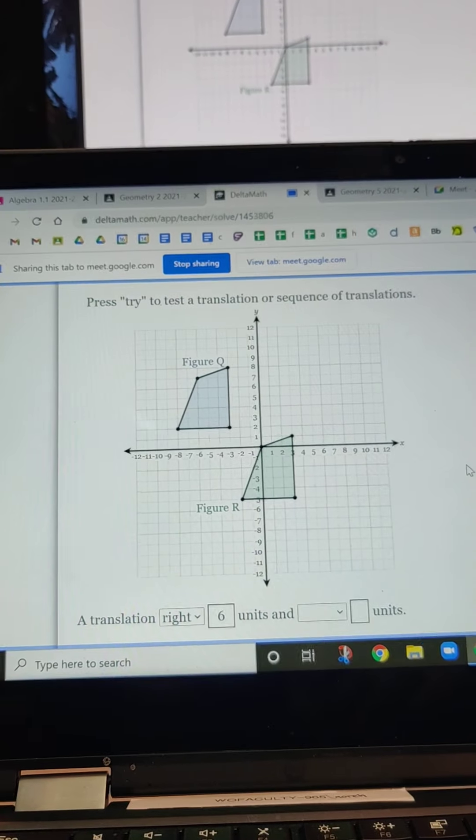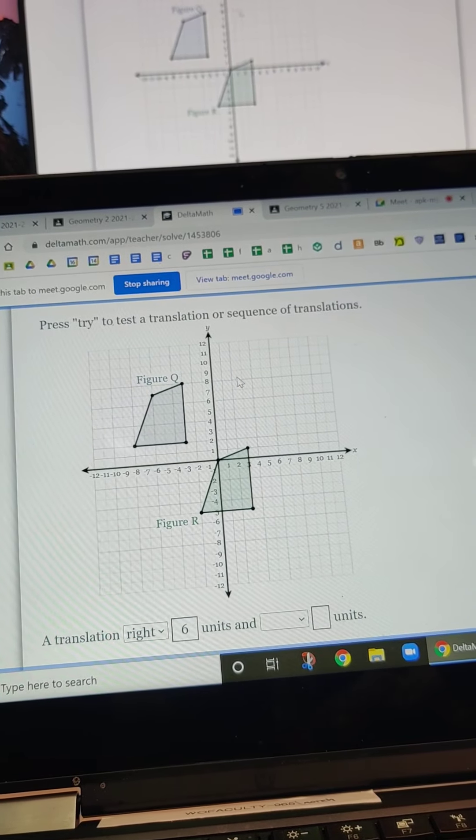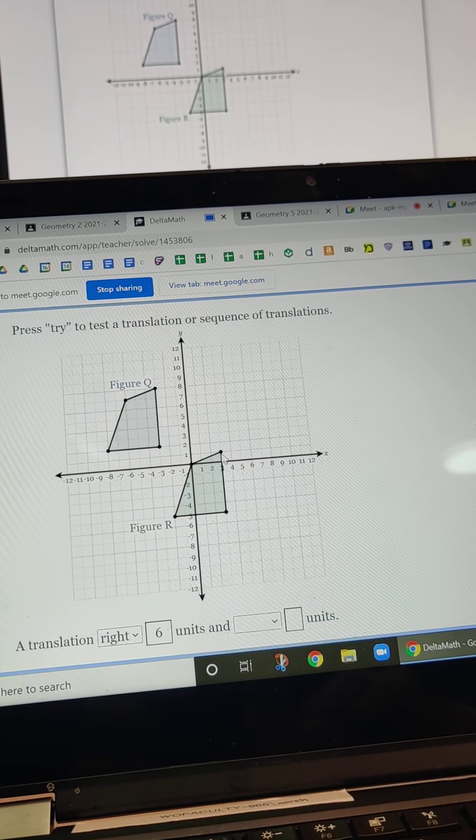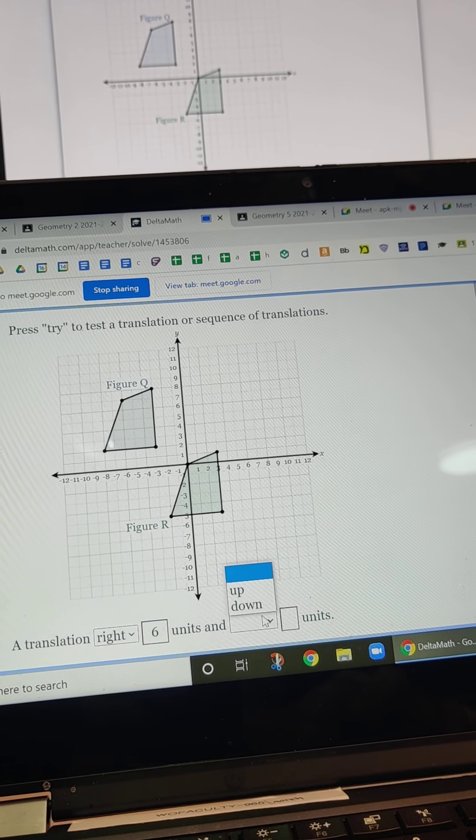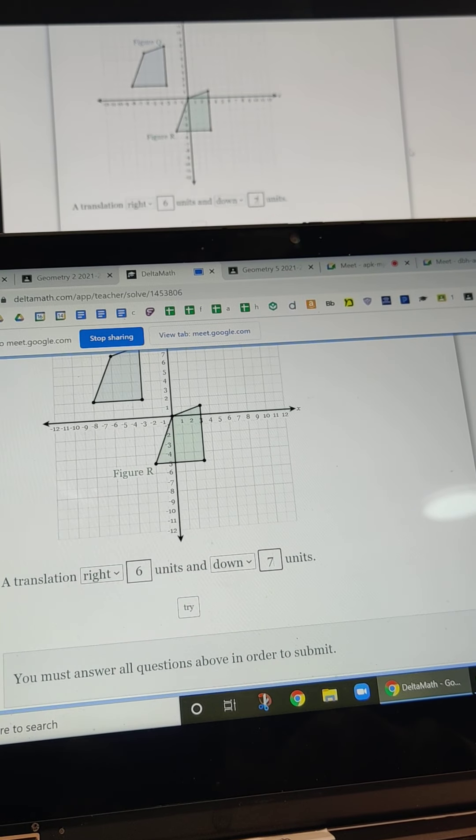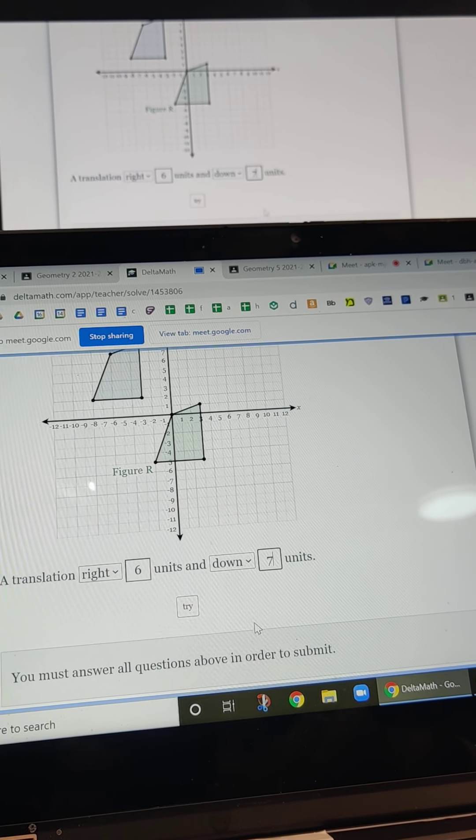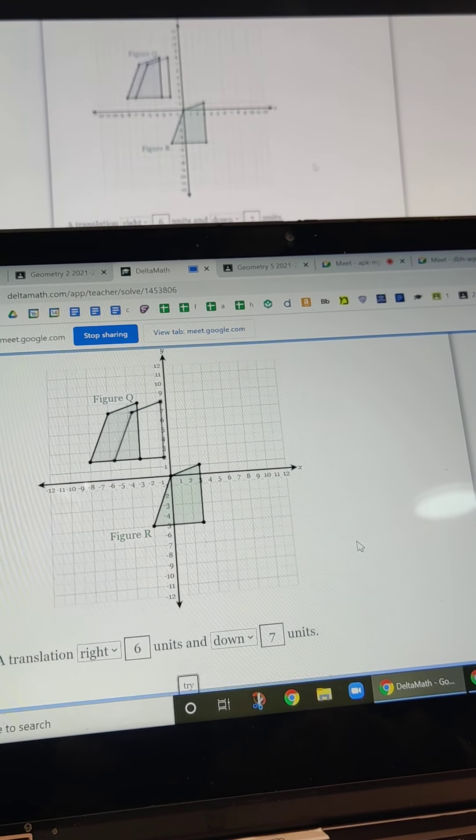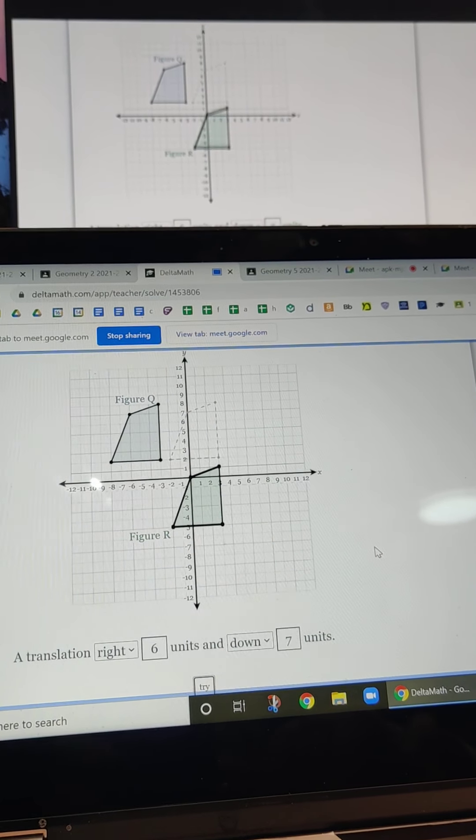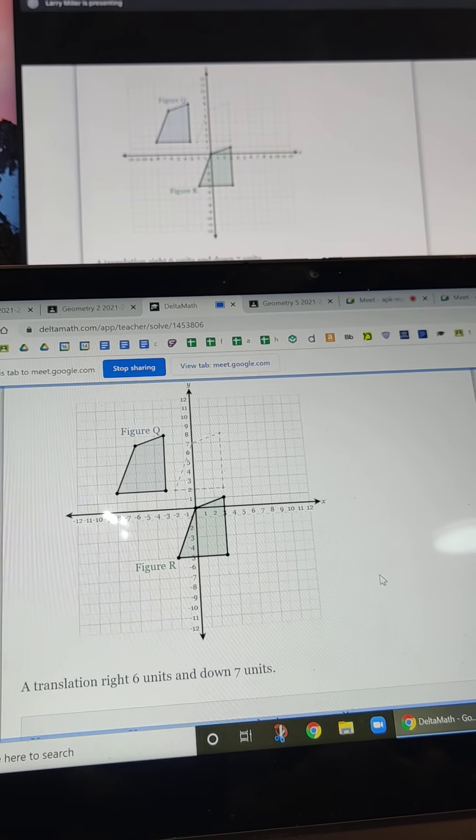And this is one of those things that I really like the way delta math does it. It teaches it in a way that's really better than I could do it without delta math. So we went right six, that leaves us over here. And then we go down one, two, three, four, five, six, seven, went down seven. So it's kind of a different way of looking what we did yesterday. Now we're translating the whole shape. That's it. Try it. See if it gets us where we want to go.